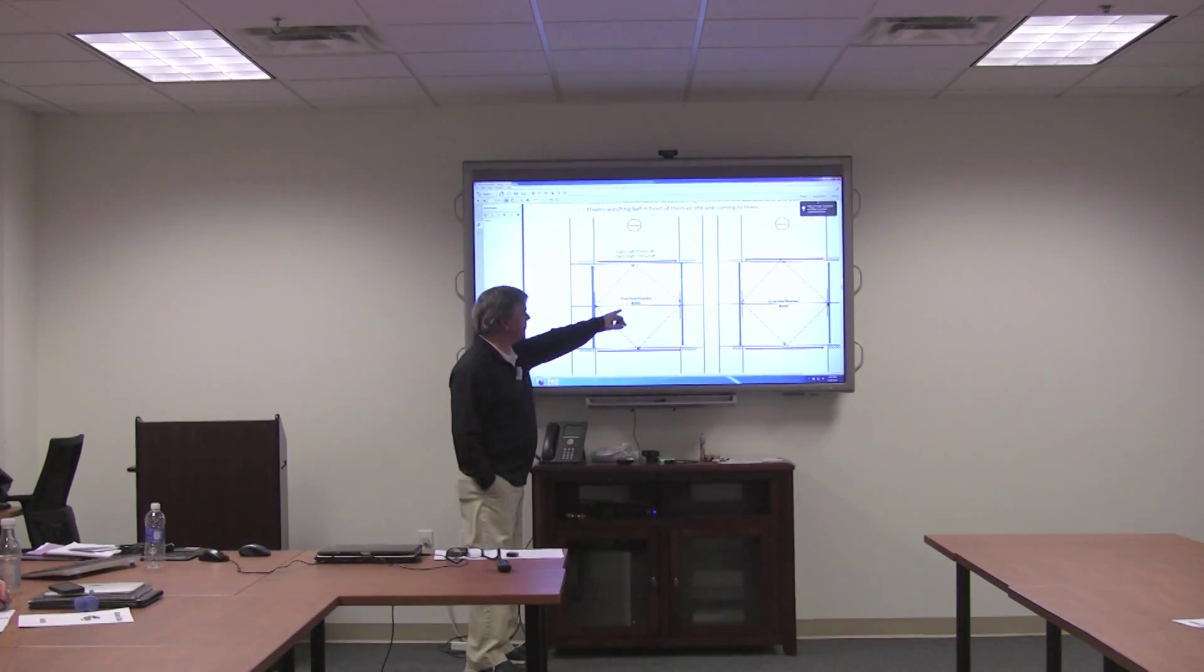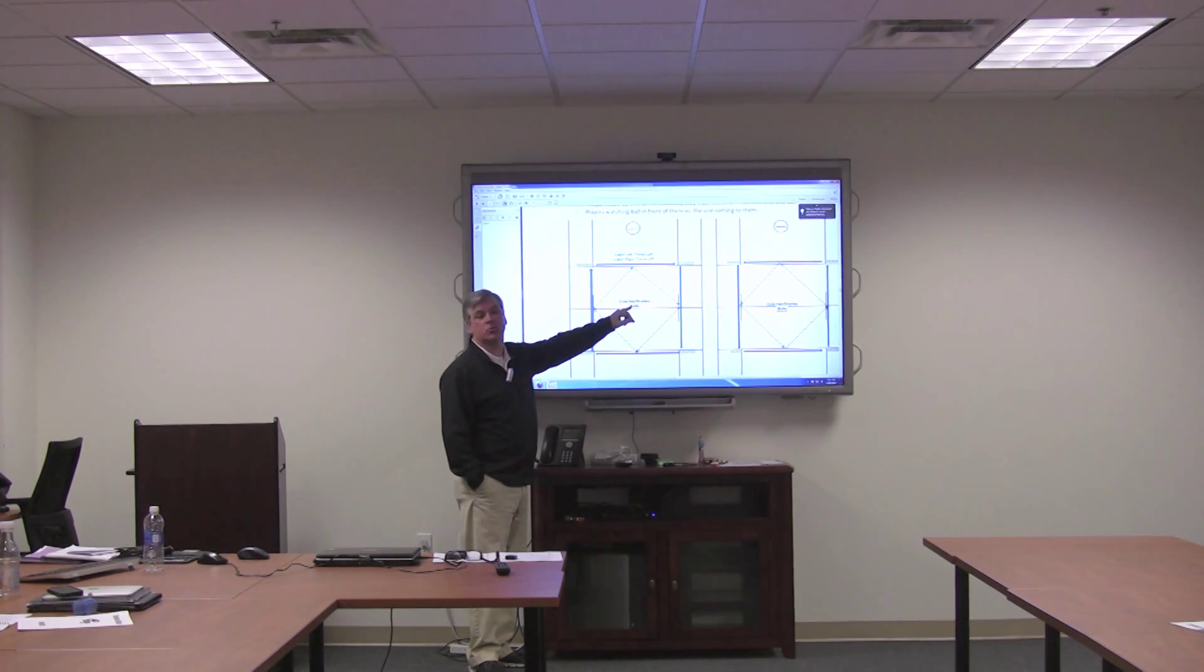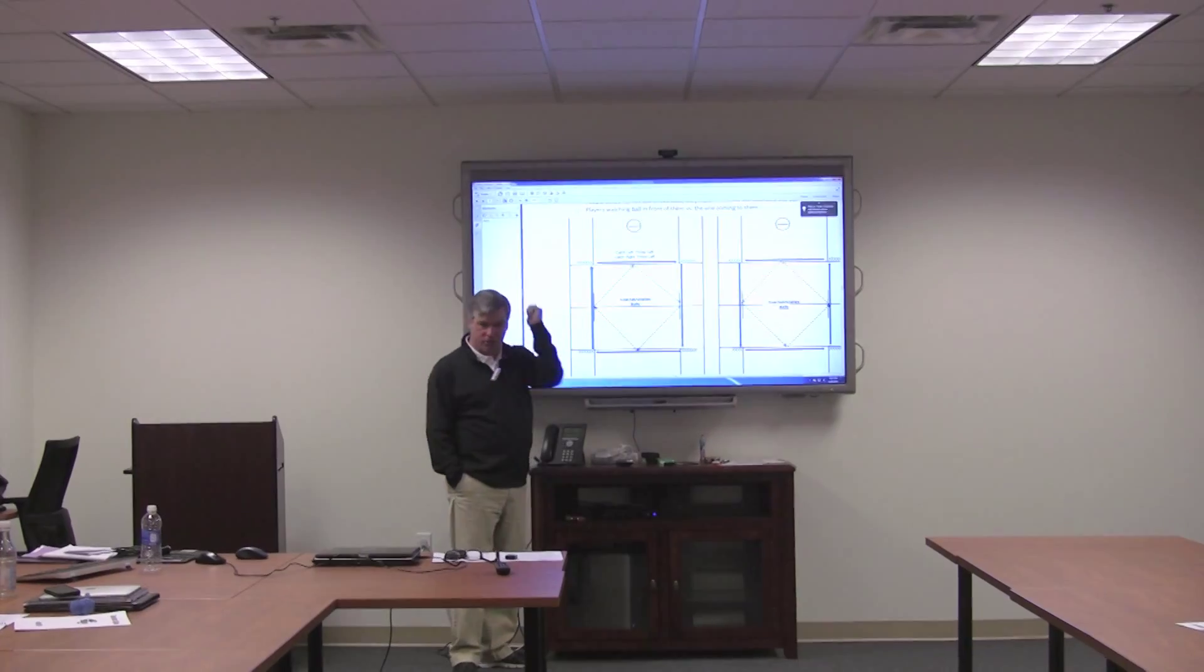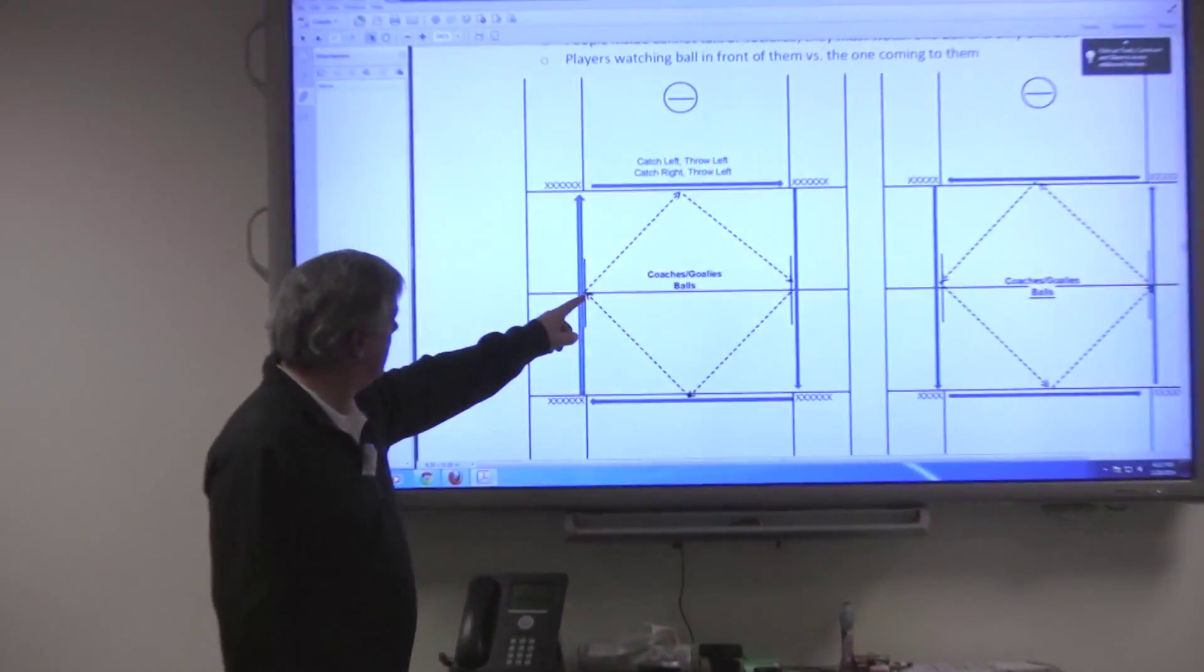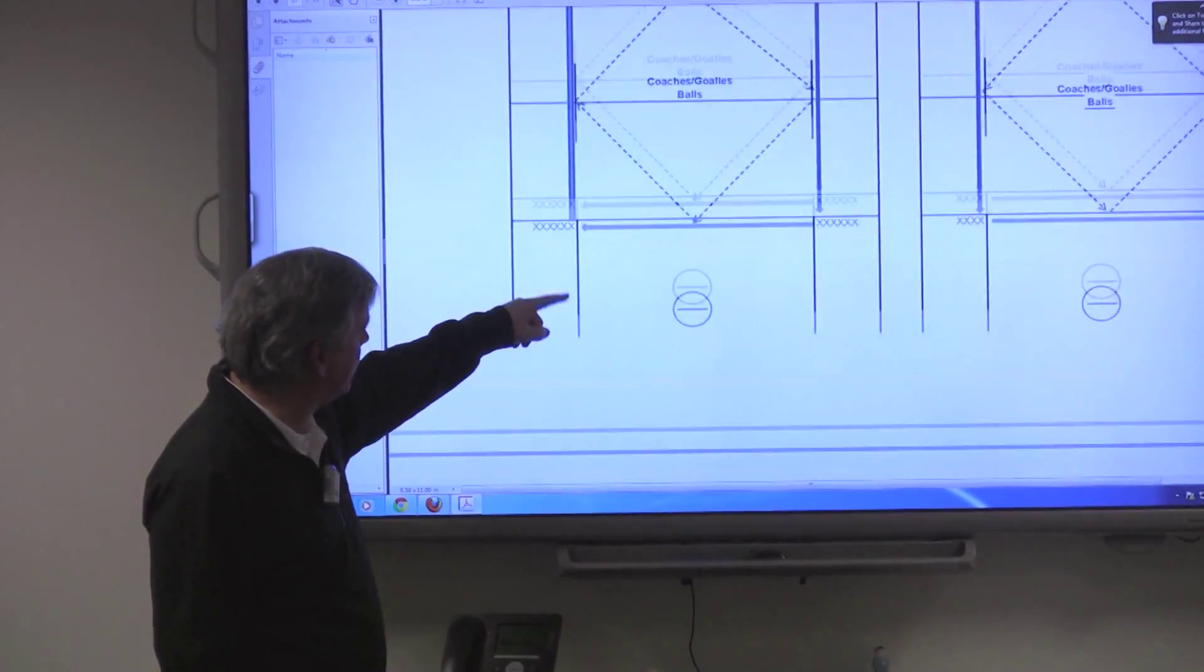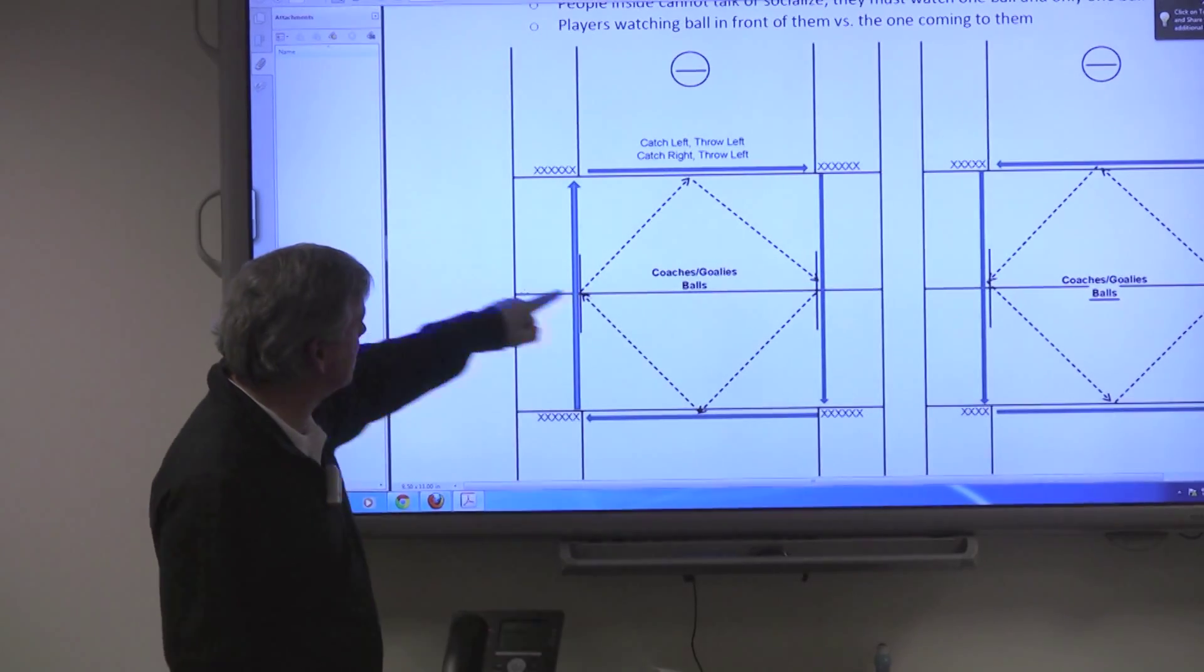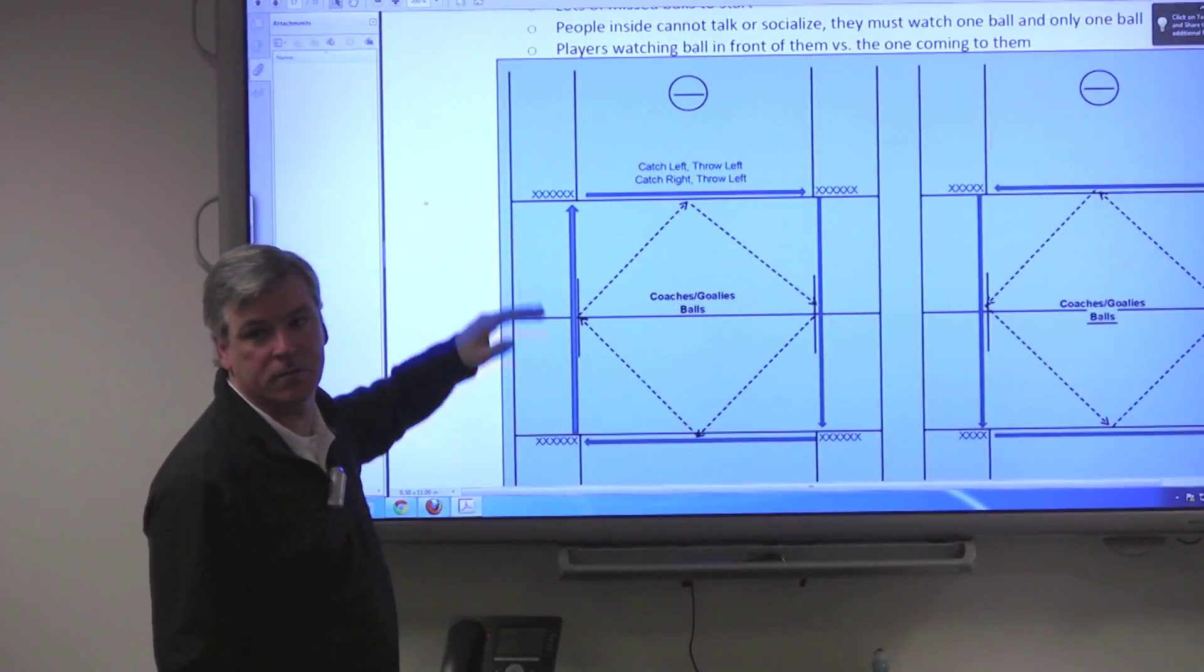The challenge is if you have two goalies in here, for them not to socialize and lose track of balls. One goalie watches one ball, one goalie watches the other. If there's a bad pass, the receiver chases it and the goalie throws to the next guy in line so the drill keeps going.